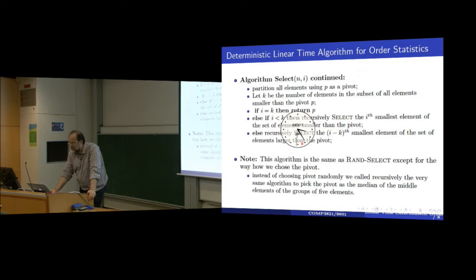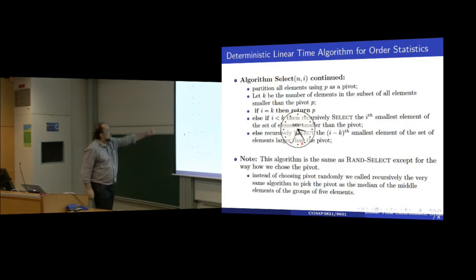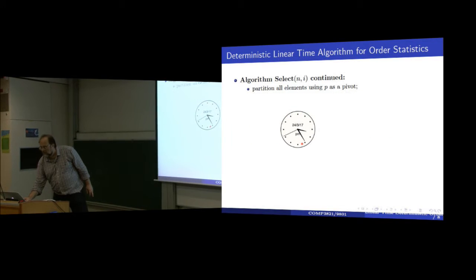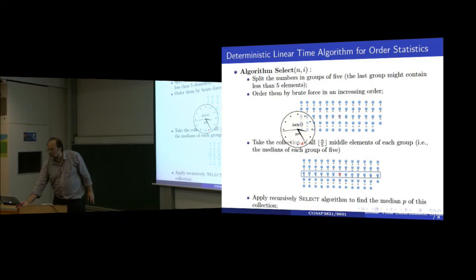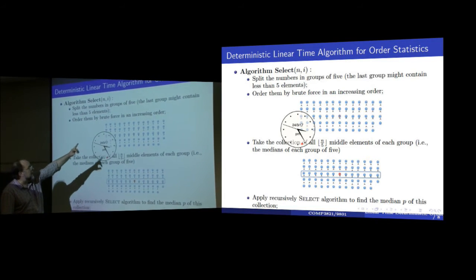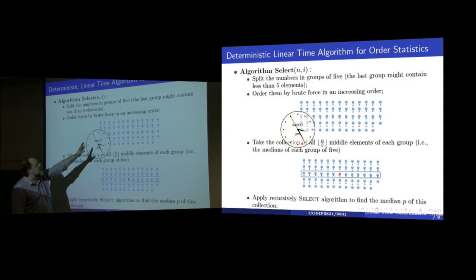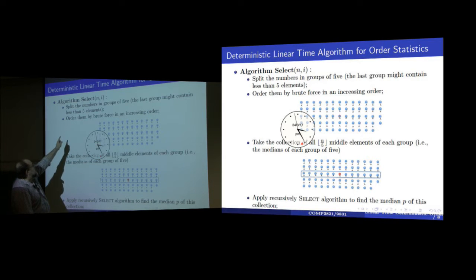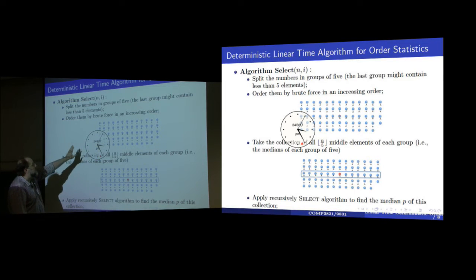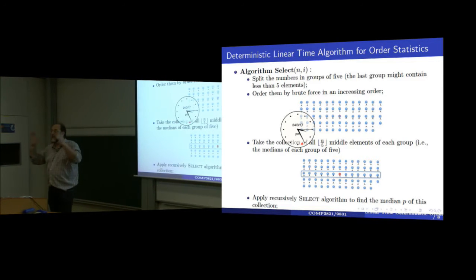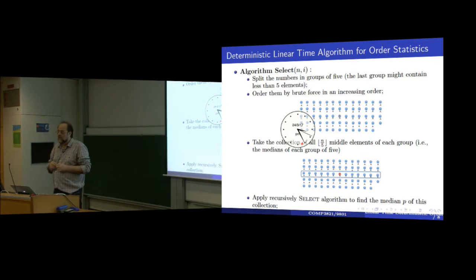Let's look at the statement. Here is the algorithm. The algorithm says: split the numbers in groups of 5. Of course, the last group might contain less than 5 elements. Order each group by brute force in an increasing order. Then there are only 5 of them — you can do it any way you want. You can simply look: let me find the smallest, put it, then find smallest of the rest, put it. Who cares, because it's only 5 elements that you have to sort. This is doable in constant time. You can use any sorting algorithm you might envision.